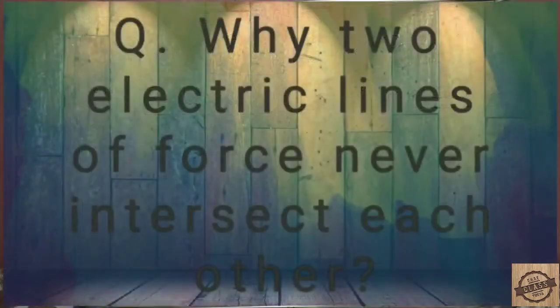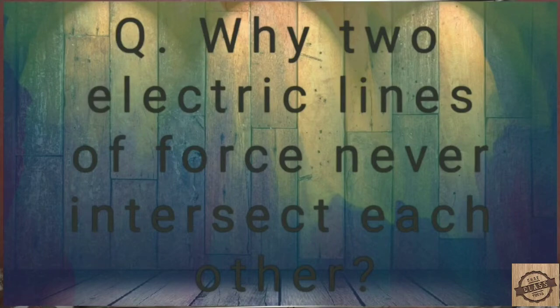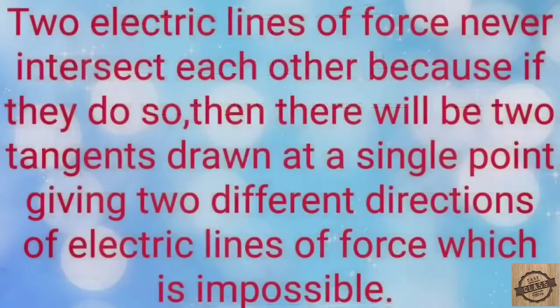The third point is very important and can be a direct exam question for two marks: why do two lines of force never intersect each other? Two electric lines of force never intersect each other because if they did intersect, there would be two tangents drawn at a single point, giving two directions of electric field intensity, which is quite impossible.